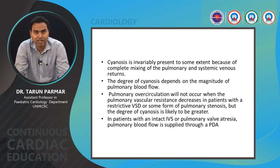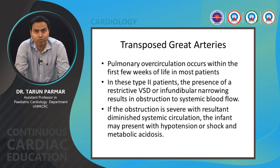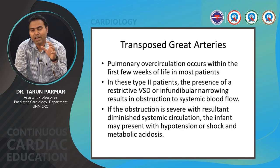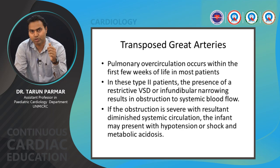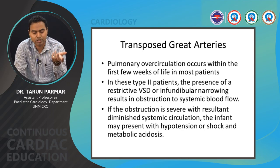In transposed great arteries, the pulmonary circulation is mostly preserved. In Type 2 patients, a restrictive VSD can result in obstruction of systemic venous blood flow, since the morphological LV connects to the pulmonary artery and the morphological RV to the systemic circulation. A restrictive VSD in this setting leads to decreased or obstructed systemic blood flow; if severe, the patient may present with hypotension or shock and metabolic acidosis, as this becomes a duct-dependent systemic circulation requiring early prostaglandin E1 (PGE1) infusion.